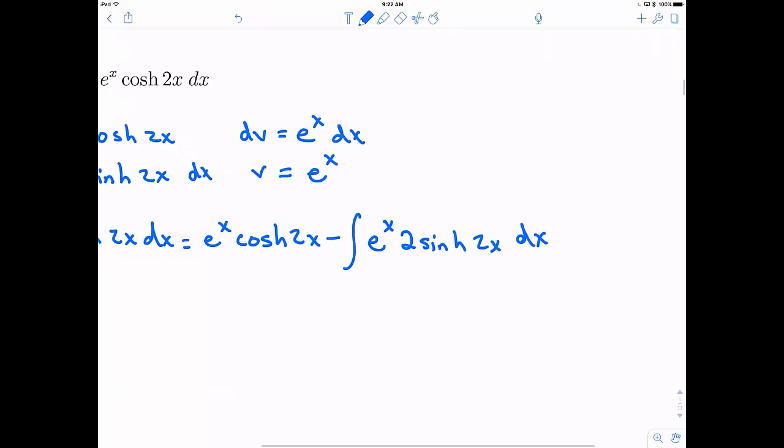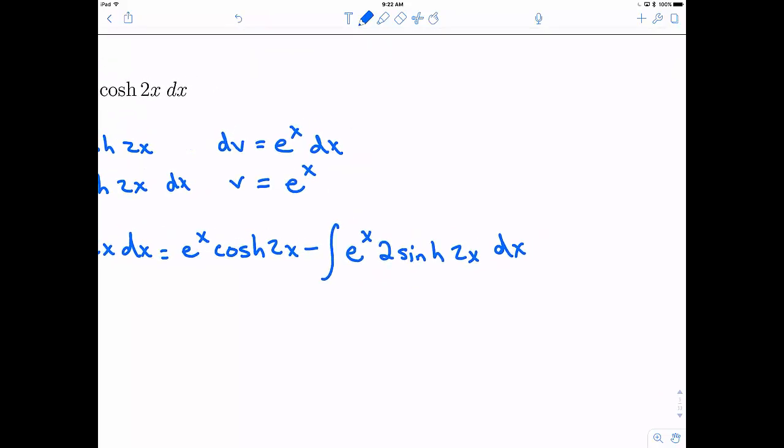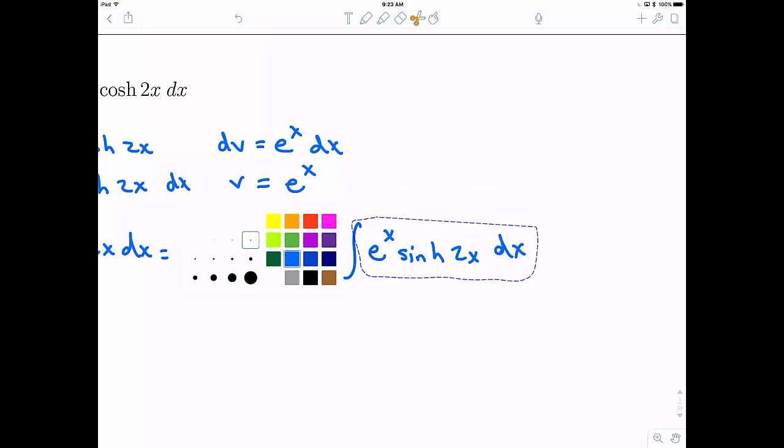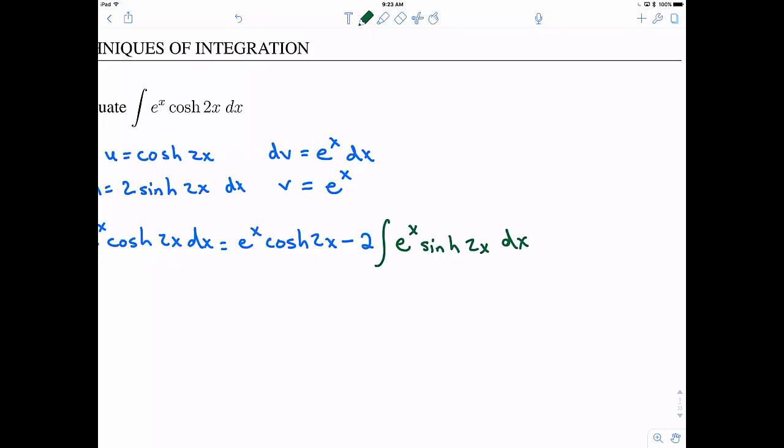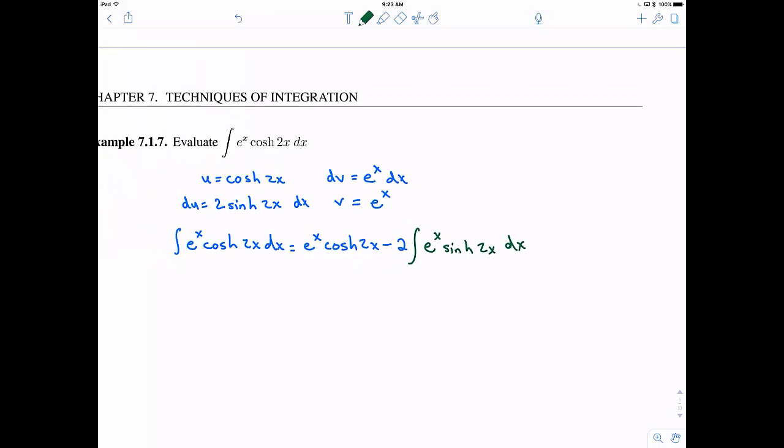And let me go ahead and spend a second here to rearrange this. So we know we can pull out constants from our integral. So I am going to cheat and use the powers of technology here. So I am going to pull out this 2 quite literally. And this is the thing now that I want to evaluate. If I can figure out this integral the claim is I win. Right? Well, it looks a lot like the first integral.